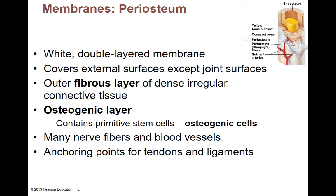The periosteum is a double-layered membrane that covers the whole outside of long bones. The only places you don't have periosteum are the ends of long bones, because that's where you have articular cartilage. The outer layer is a fibrous layer. The main cell found in the periosteum is the osteogenic cell.